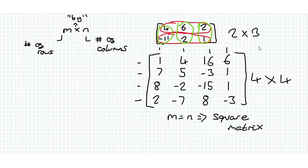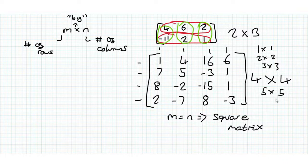So a matrix that's 1 by 1, 2 by 2, 3 by 3, 4 by 4, 5 by 5, etc., all the way up to M times M, is a square matrix.